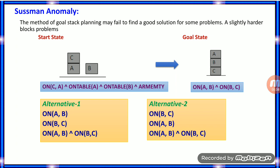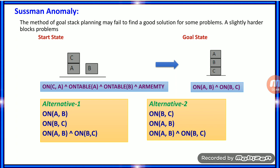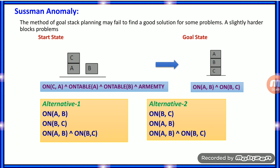The goal state is to place all the blocks one on top of another: on(A, B) and on(B, C). To achieve this goal state you have two alternatives, as shown in the slide.